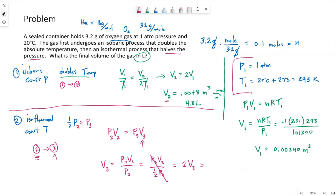So twice this 4.8 liters. We started the isothermal process with 4.8 liters. So 9.6 liters is the volume we will end up with. The final volume is 9.6 liters.